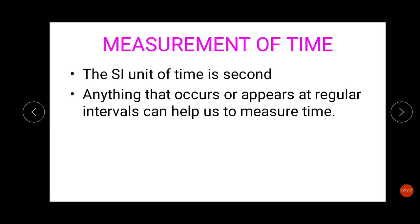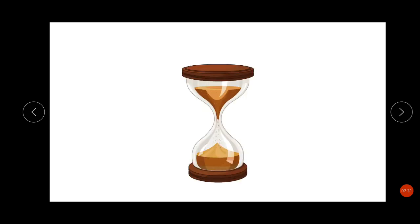In earlier times when we didn't have any devices, people used to see the position of the sun in the sky and tell the time. Now I'm going to show you a couple of pictures and you have to identify them. What is this? Can you guess what device this is? You might have seen this in old movies or old story books. This device was used in early days to measure time. It is called a sand clock.